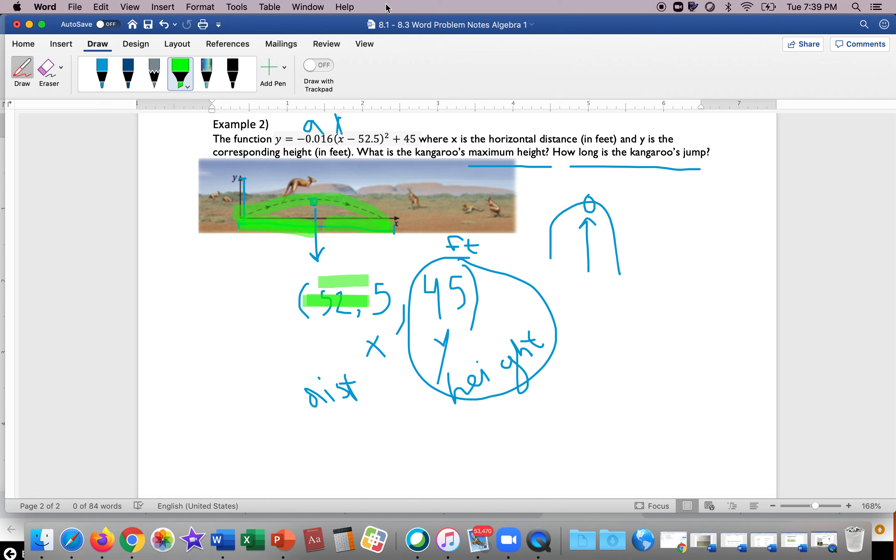Say we have to double it, so 52.5 plus 52.5 will get us the kangaroo's jump. So the kangaroo has jumped in total from start to finish 105 feet.